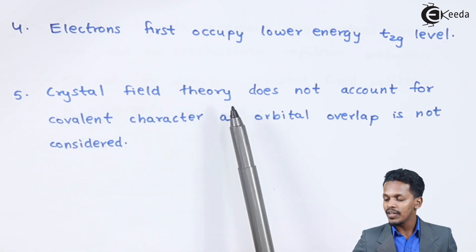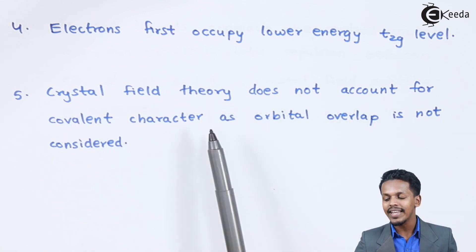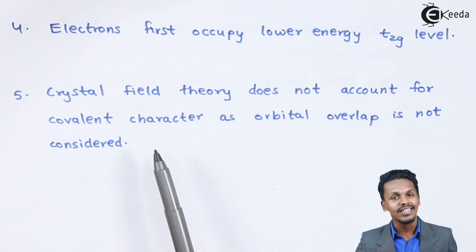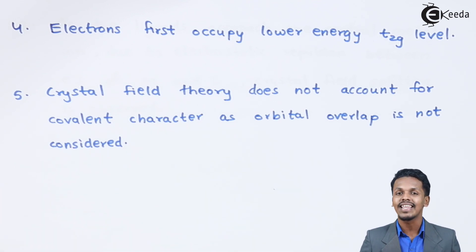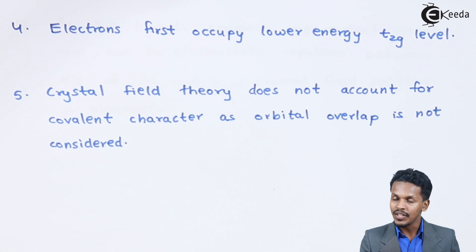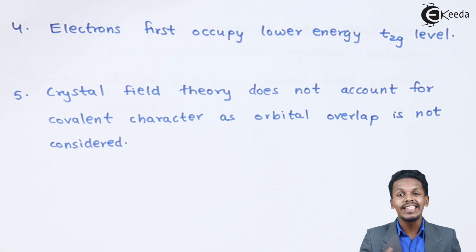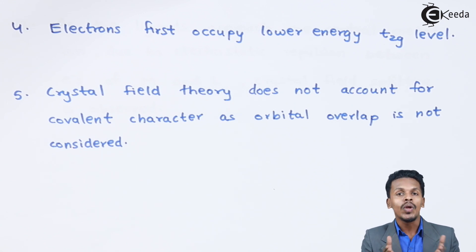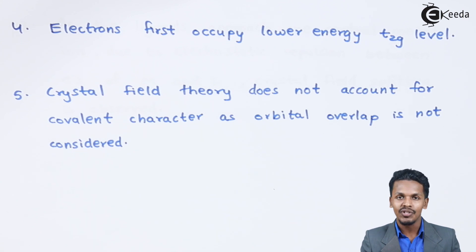The fifth point is that crystal field theory does not account for covalent character, as orbital overlap is not considered. The direction in which the ligands and metals are oriented causes the d orbitals to split into T2G and EG levels, but no orbital overlap is assumed.